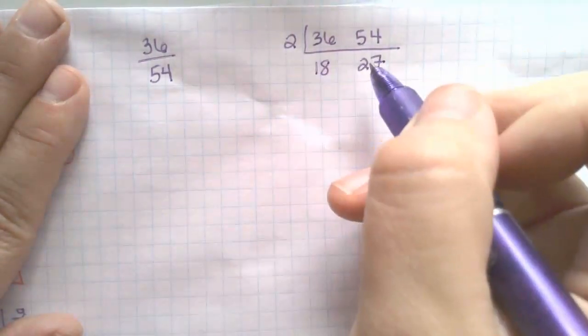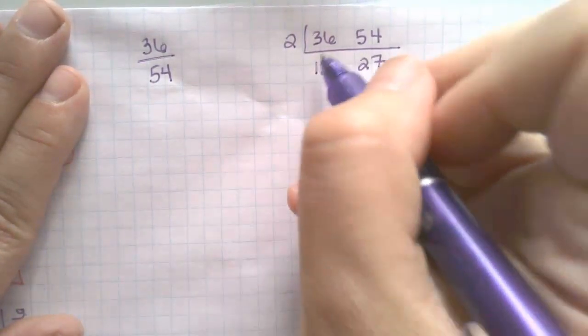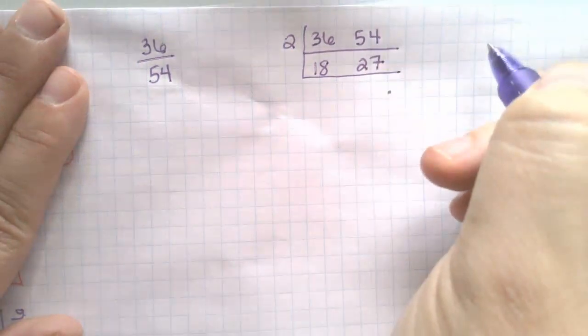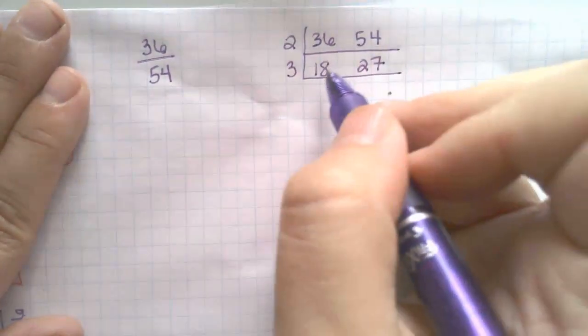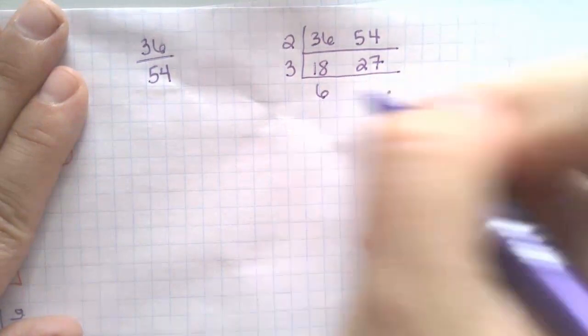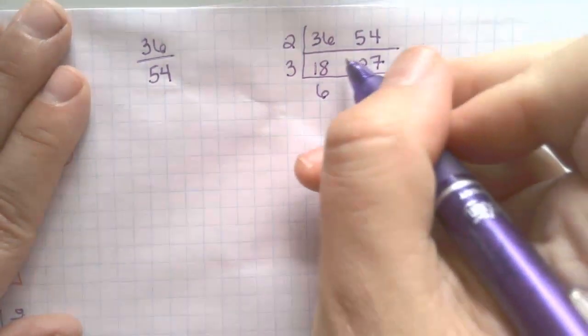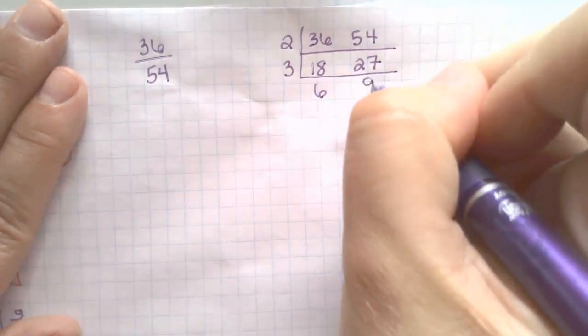So I'm going to look at this again and be like, hmm, wait a second. They both have, I can both put 3. That's a prime number. 18 divided by 3 is 6. 27 divided by 3 is 9.